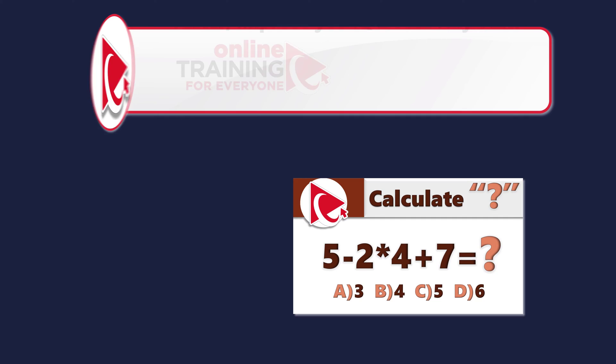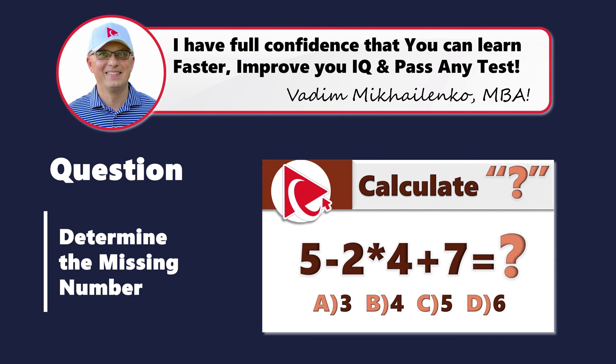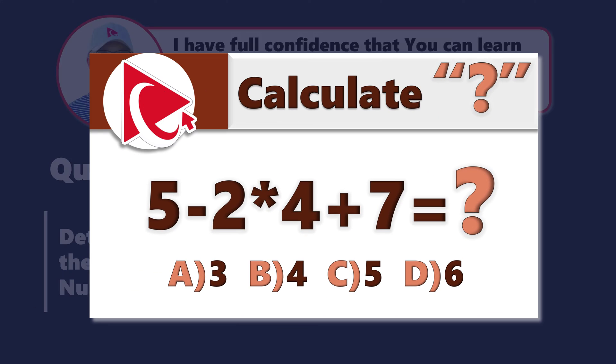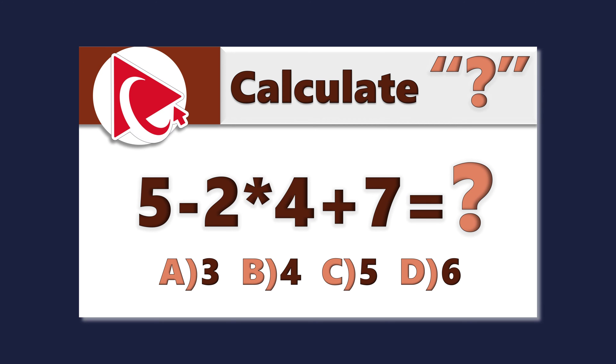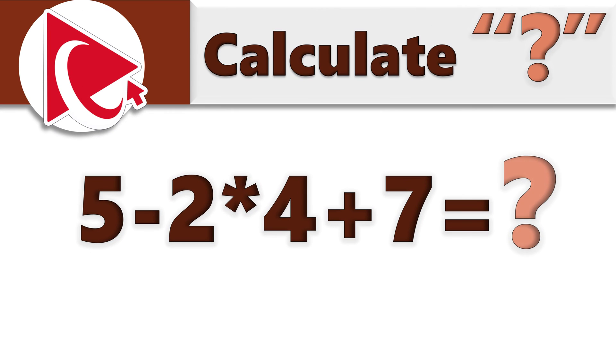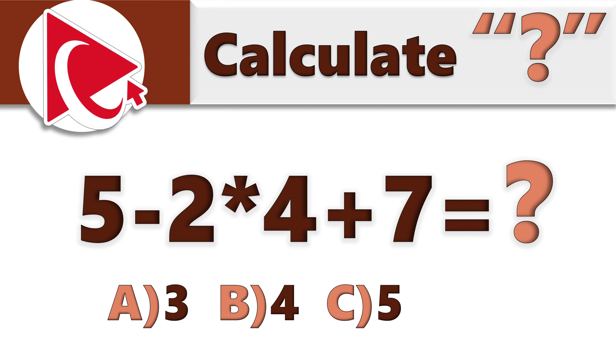Get ready for a mind-bending question that will make you question your own existence. Well, maybe not to that extreme, but definitely a cognitive workout. You are presented with the very simple expression: 5 minus 2 multiplied by 4 plus 7 equals question mark. And question mark is the value that you need to calculate. Once calculated, select your answer out of 4 possible choices: 3, 4, 5, or 6.